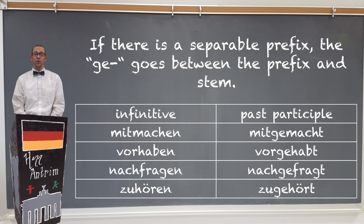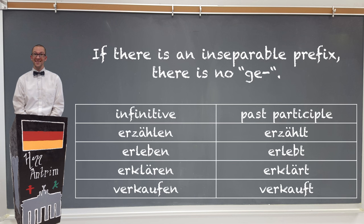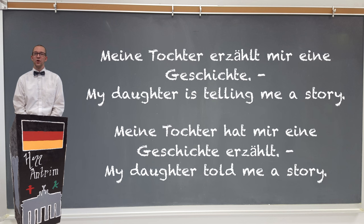If the verb has a separable prefix, you put the prefix first, then the GE, and then the stem of the verb. Ich mache gerne mit — I like to participate. Ich habe gerne mitgemacht — I liked participating. If the verb has an inseparable prefix, you don't add a GE at all. Meine Tochter erzählt mir eine Geschichte — My daughter is telling me a story. Meine Tochter hat mir eine Geschichte erzählt — My daughter told me a story.